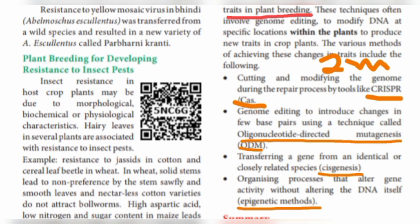The next technique involves closely related species. A gene is transferred between closely related species — from A to B. This gene transfer process between closely related species is called cisgenesis.